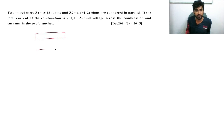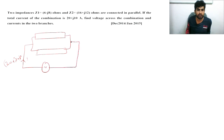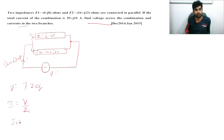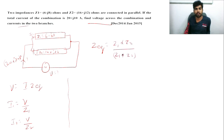Next problem: two impedances Z1 and Z2 are connected in parallel, and the total current flowing is (20 + j10) amps. Z1 = 6 − j8 and Z2 = 16 + j12. We need to find the voltage across the combination and the currents in the two branches. Voltage V = I × Z_equivalent. For branch currents: I1 = V/Z1 and I2 = V/Z2, so we first calculate Z_equivalent = Z1×Z2 / (Z1 + Z2).